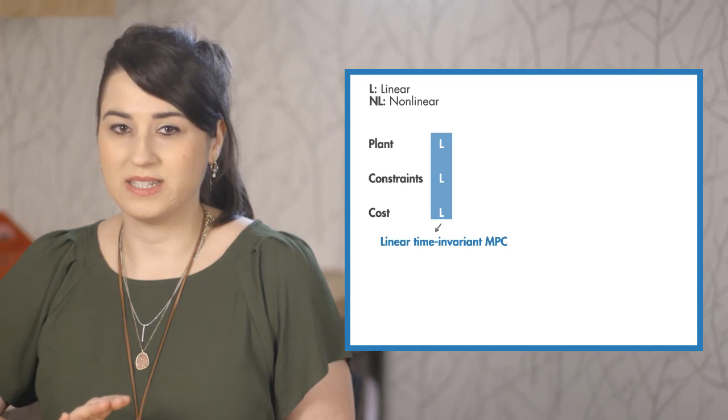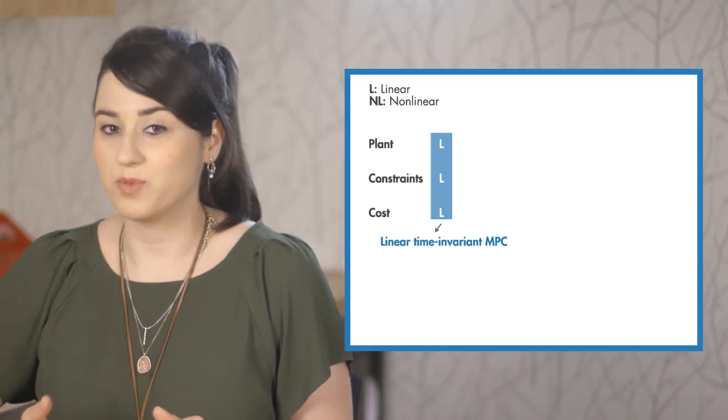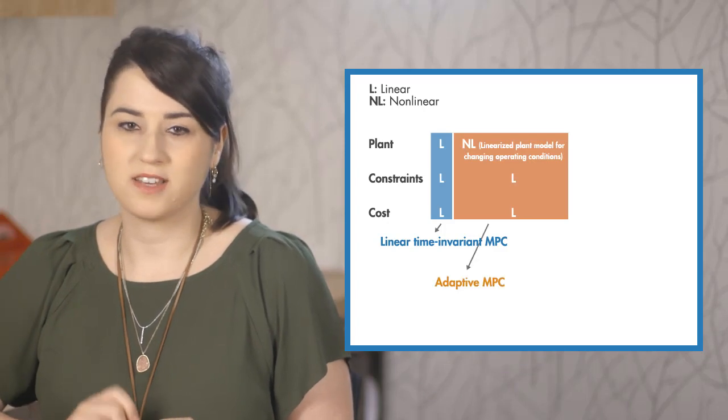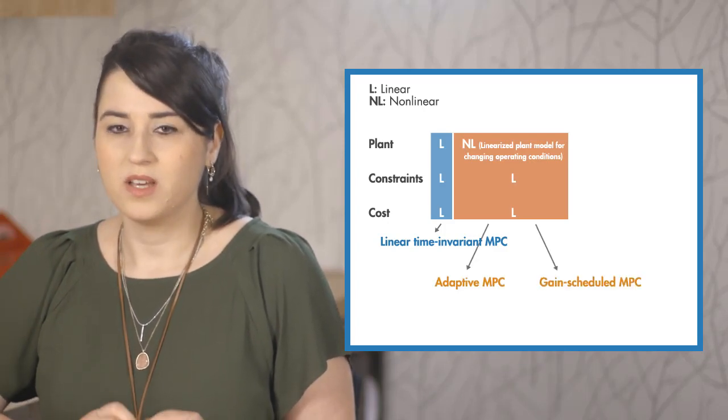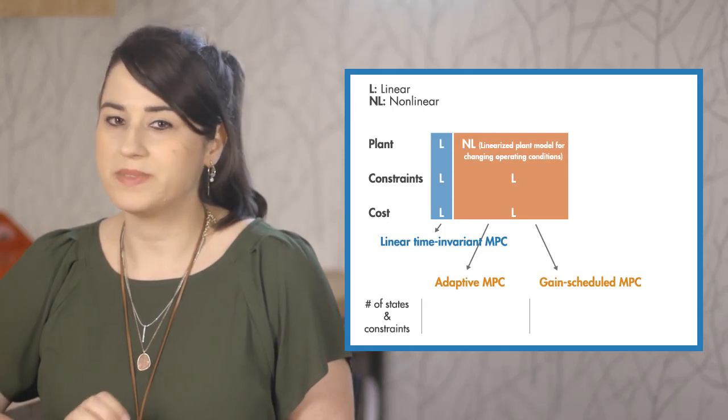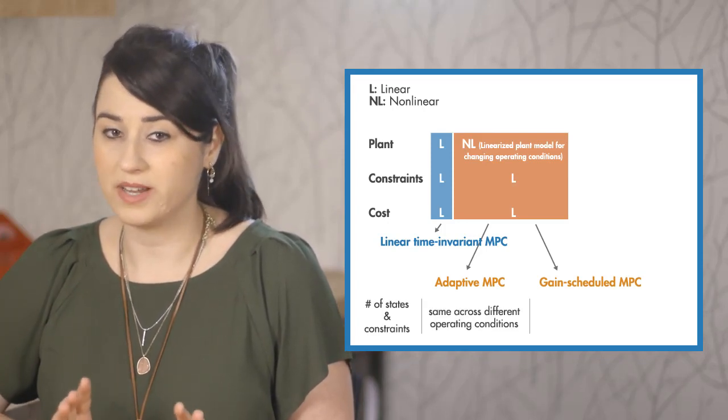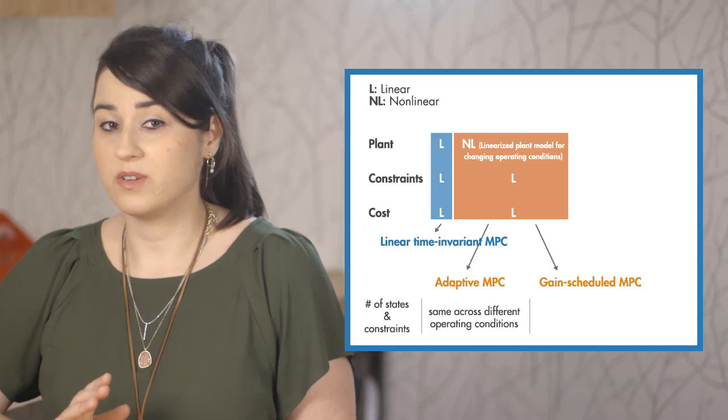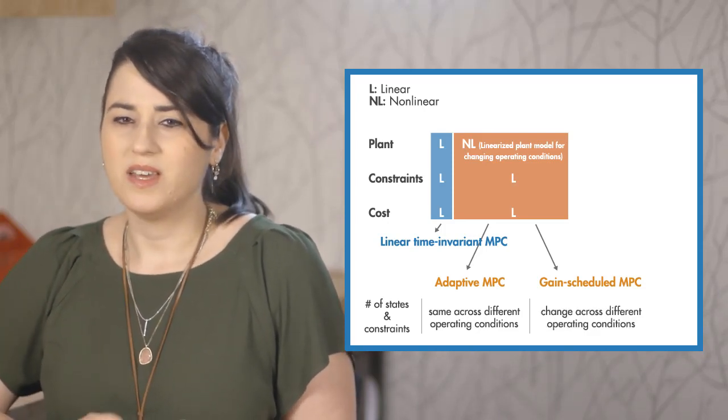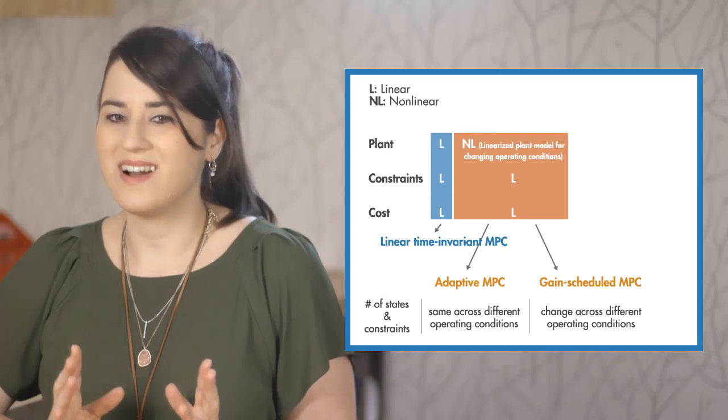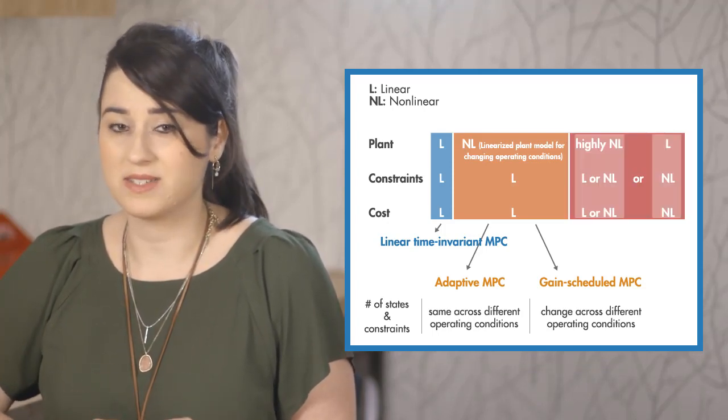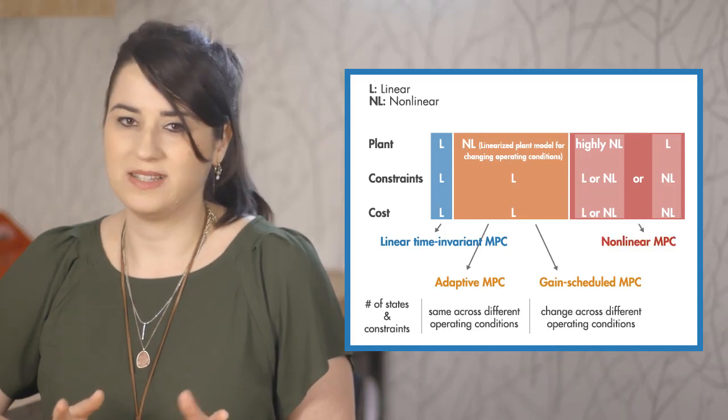In summary, if the plant you're dealing with is nonlinear but can be approximated by linear models, you can use adaptive and gain-scheduled MPC controllers. Use adaptive MPC if the structure of the optimization problem doesn't change across different operating conditions. However, if it does, then you can use gain-scheduled MPC. If none of these work because you have a highly nonlinear system that can't be approximated well by linearization, then you can use nonlinear MPC.